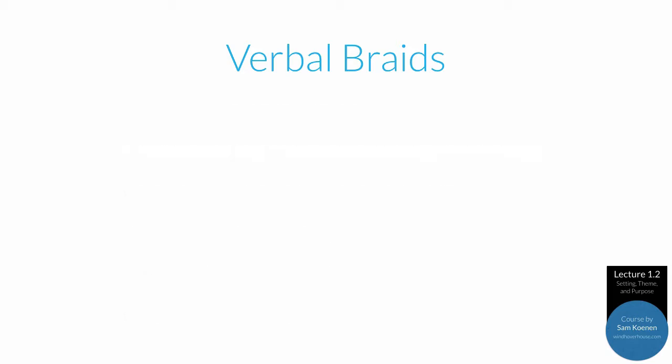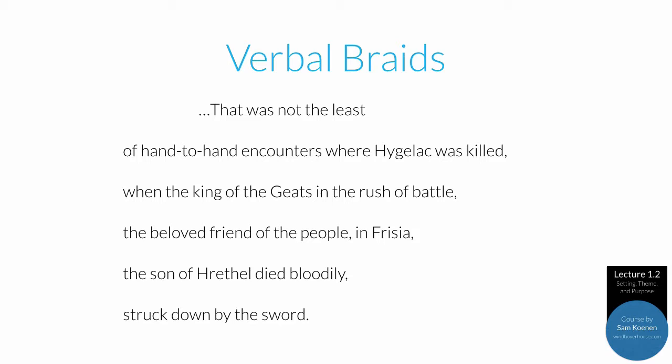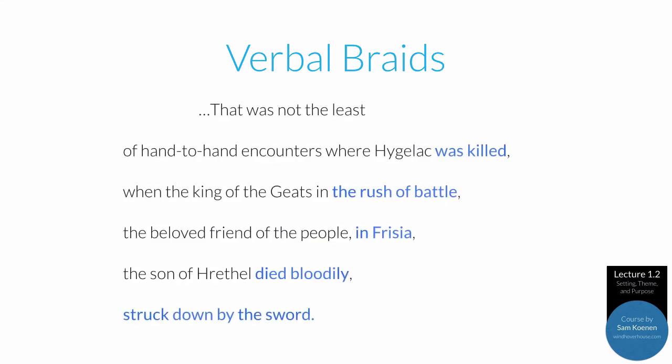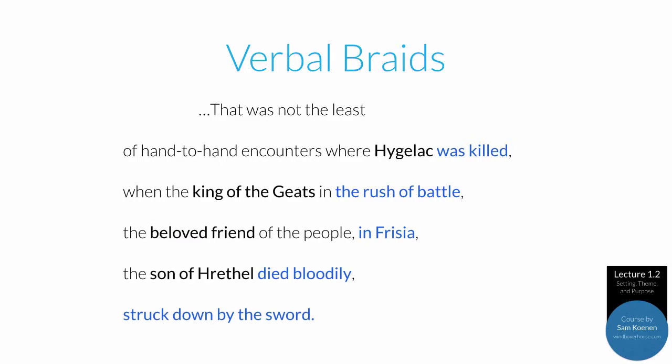Consider this example: "That was not the least of hand-to-hand encounters where Hygelac was killed — when the king of the Geats, in the rush of battle, the beloved friend of the people, in Frisia, the son of Hrethel, died bloodily, struck down by the sword." There are two braids in these lines: the braid of Hygelac and the braid of Death in Frisia — who was killed, in the rush of battle, in Frisia, died bloodily, struck down by the sword. These lines interweave those two braids.